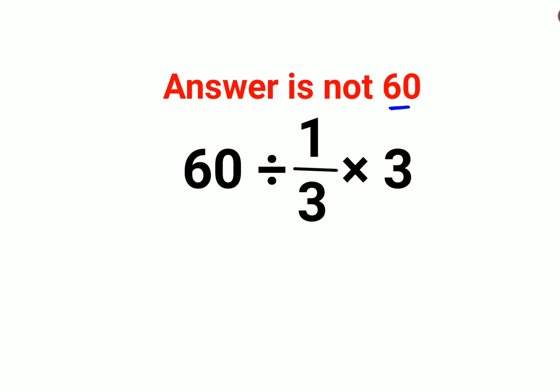Now let's quickly understand why it's not 60. Here we have a question which has just division and multiplication. Division and multiplication hold equal precedence in mathematics.